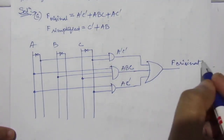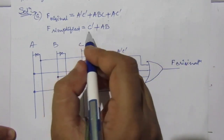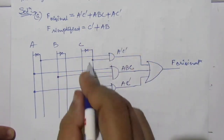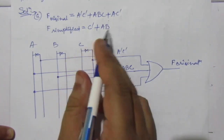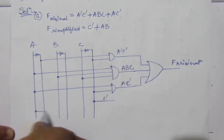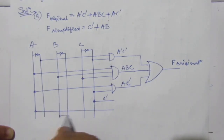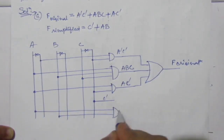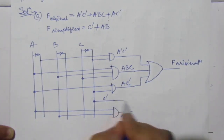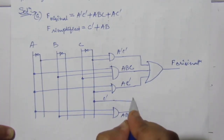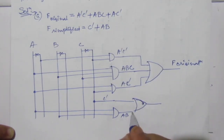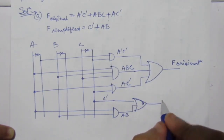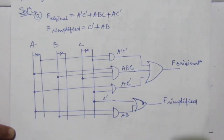Then we have f simplified equal to c̄ plus a·b. c̄ is this line. Then we have a·b: a is this line and b is this line, use an AND gate to get a·b. Then c̄ plus a·b requires an OR gate. Use an OR gate here to get f simplified. This is the f simplified diagram.